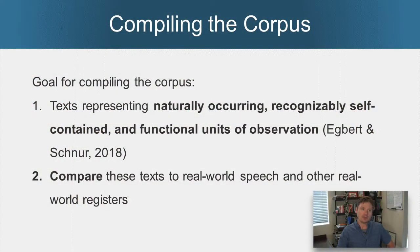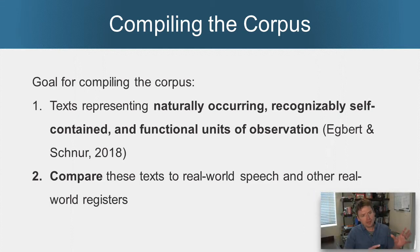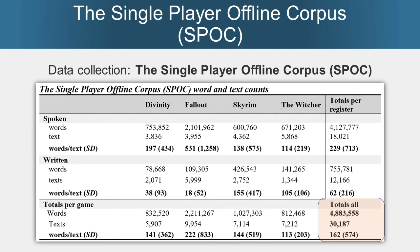Over the past couple of years, I've been compiling a corpus. My goal was to get texts from these games into naturally occurring, recognizable, self-contained and functional units of observation, and then compare the spoken language in the games to that of the real world. This was quite a long process. But in the end, my single player offline corpus, or SPOC, is almost 5 million words and just over 30,000 texts in the spoken and written contrast — so it's pretty large.